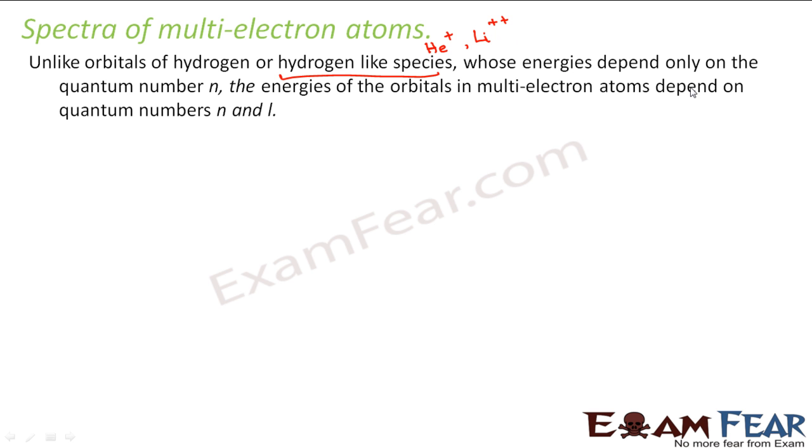Whose energies depend only on the quantum number n. The energies of the orbitals in multi-electron atoms depend on quantum numbers n and l. So that is why things become complex, because Bohr had taken into consideration only the principal quantum number. He took into consideration the quantization of energy levels, but he has taken only one parameter and that is the principal quantum number. Now, principal quantum number alone is not sufficient to describe the atomic spectra of multi-electron atoms.